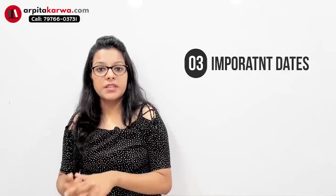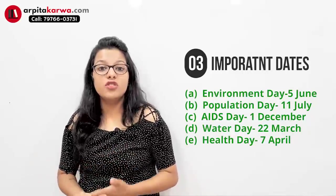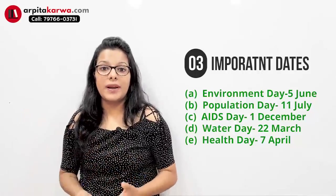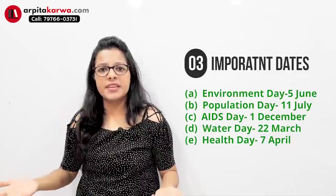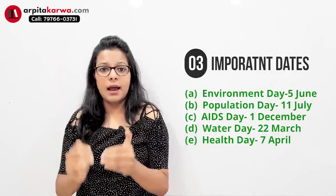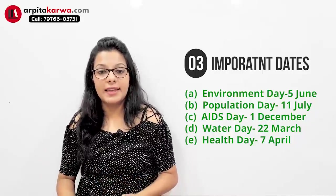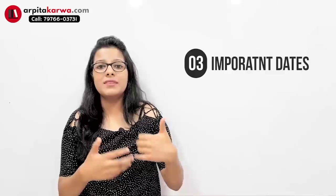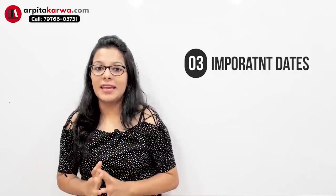The third area covers important dates frequently asked in the NET concerning environment. Every year on 5th June we celebrate World Environment Day, on 11th July we celebrate Population Day, on 1st December we celebrate AIDS Day, on 22nd March we celebrate Water Day, and on 7th April we celebrate Health Day. You can find a full list on any good website. Try to remember at least 10 to 12 dates — remember them in order so you can answer correctly on exam day.